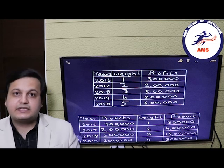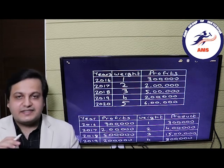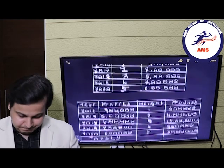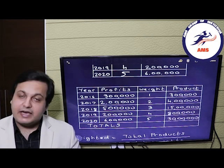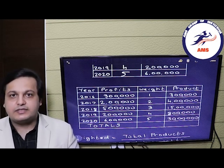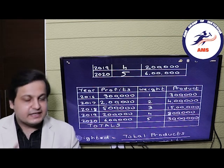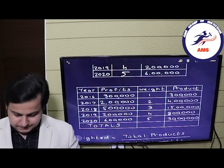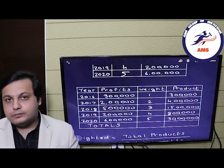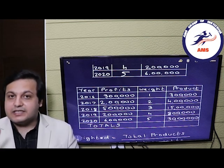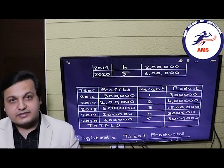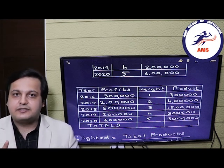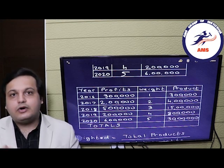Now we have assigned the weights, so we move forward towards calculating the product, which is the weights multiplied by the profits in that year. The table has year, profits, weights, and products. So: 2016 — 3 lakhs into 1 is 3 lakhs; 2017 — 2 lakhs into 2 is 4 lakhs; 2018 — 5 lakhs into 3 is 15 lakhs; 2019 — 2 lakhs into 4 is 8 lakhs; 2020 — 6 lakhs into 5 is 30 lakhs. So we have taken out all the products.